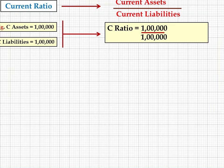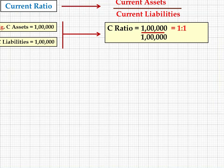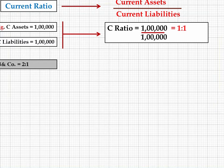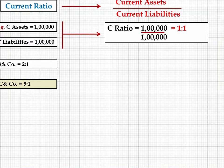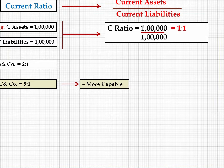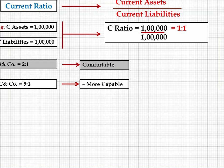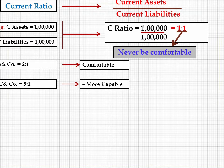For example, if current assets are 1 lakh and current liabilities are 1 lakh, the current ratio is 1:1. If firm B has a current ratio of 2:1, and firm C has 5:1, then C has 5 rupees in current assets for every 1 rupee of liability — C will be most comfortable paying current liabilities. B will also be comfortable, but A at 1:1 can never be comfortable in paying current liabilities.